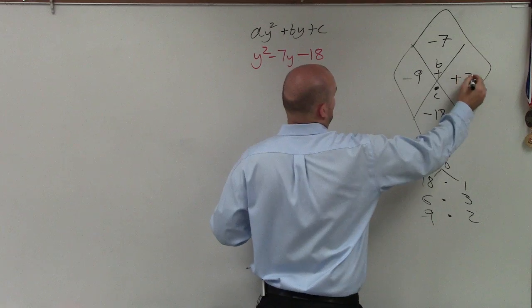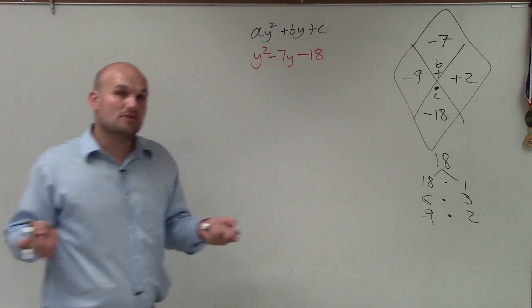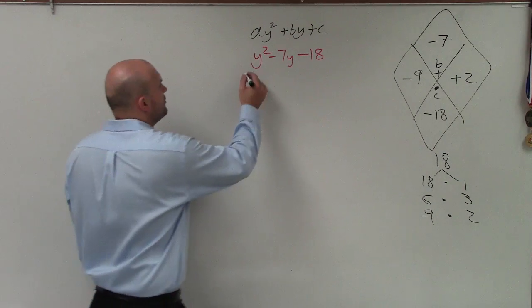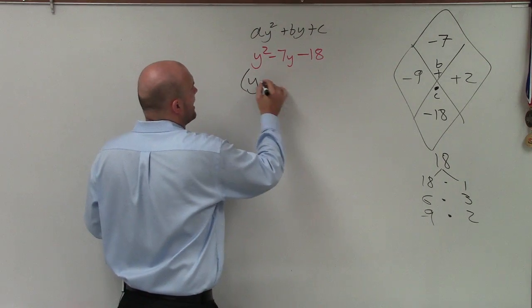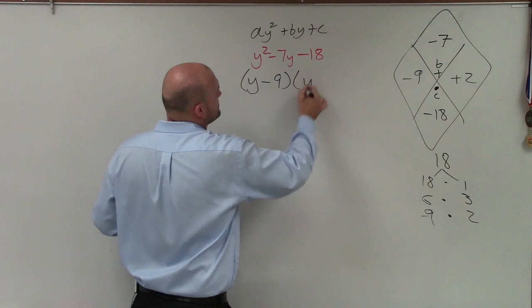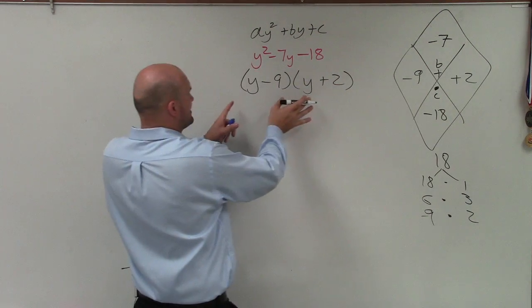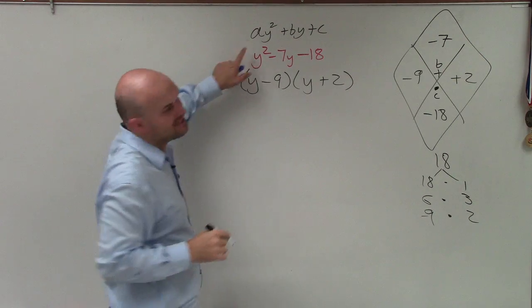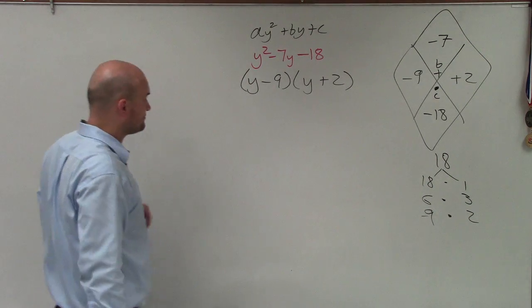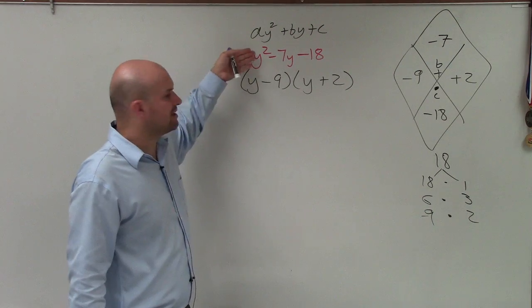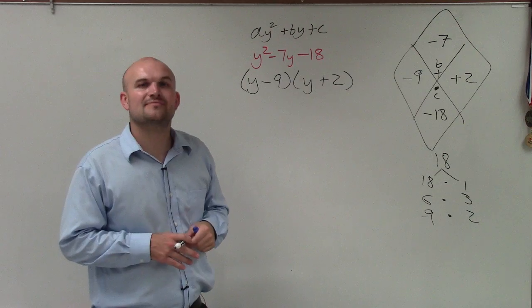So I just write negative 9 here and positive 2 there. Now, those are going to be my two values for my factors, which I can now write as (y minus 9) times (y plus 2). And we take these two values and write them in our factors when a is equal to 1 and we're trying to factor. So therefore, we have now written our trinomial as a product of its two factors. Thanks.